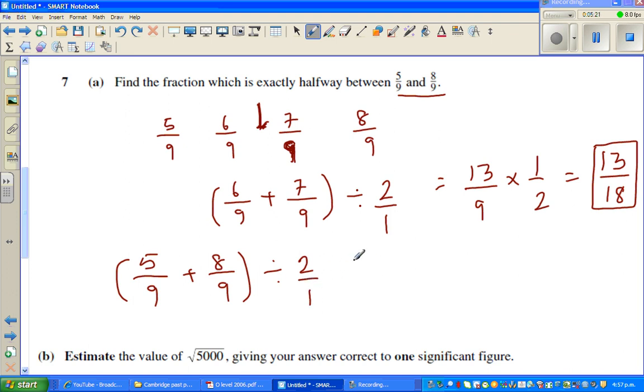So which is 13/9 times 1/2. 8 plus 5 is 13. So that is 13 out of 18. This is also a different way of doing it, but both will give you the same answer.